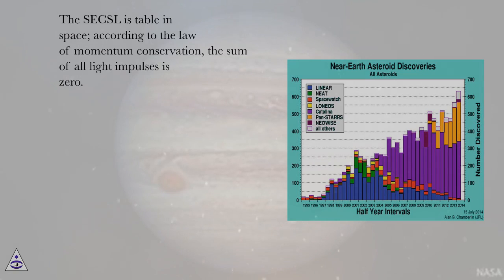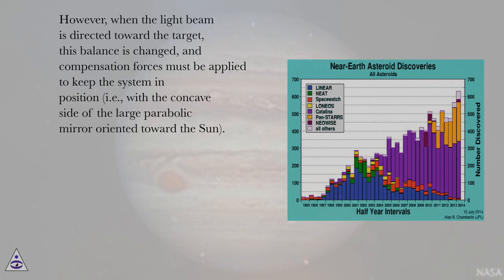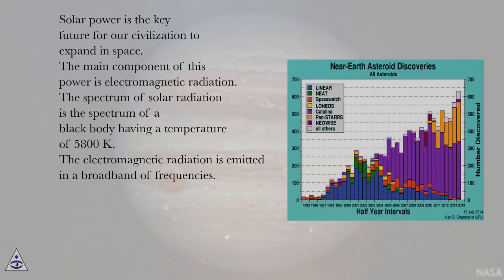The system's stability in space relies on the law of momentum conservation — the sum of all light impulses is zero. However, when the light beam is directed toward the target, this balance is changed and compensation forces must be applied to keep the system in position, with the concave side of the large parabolic mirror oriented toward the sun. Solar power is the key feature for our civilization to expand in space.